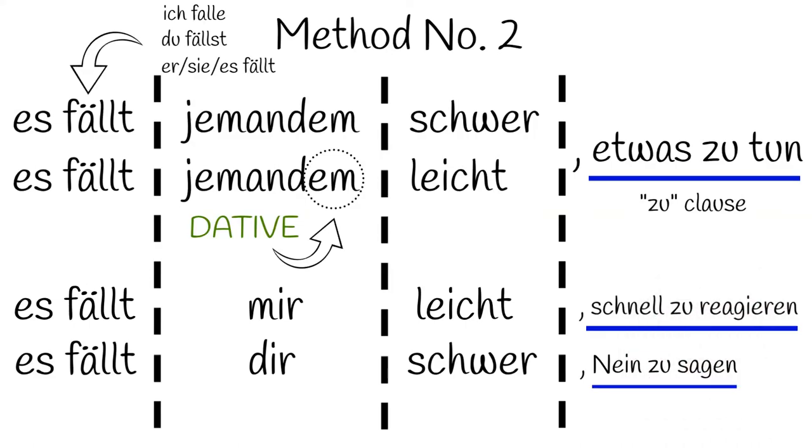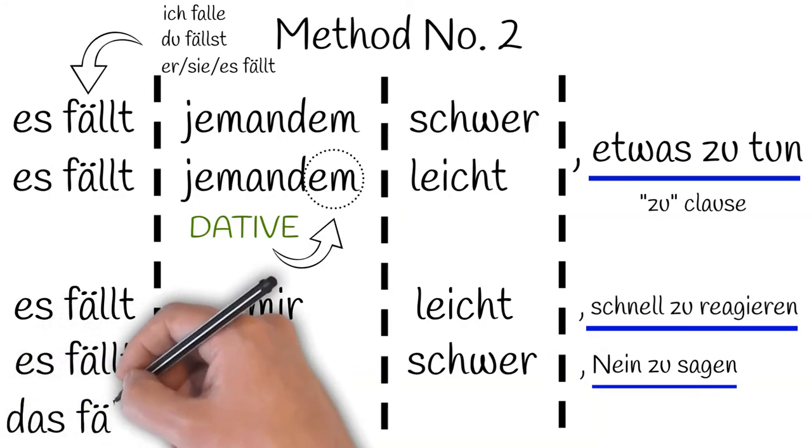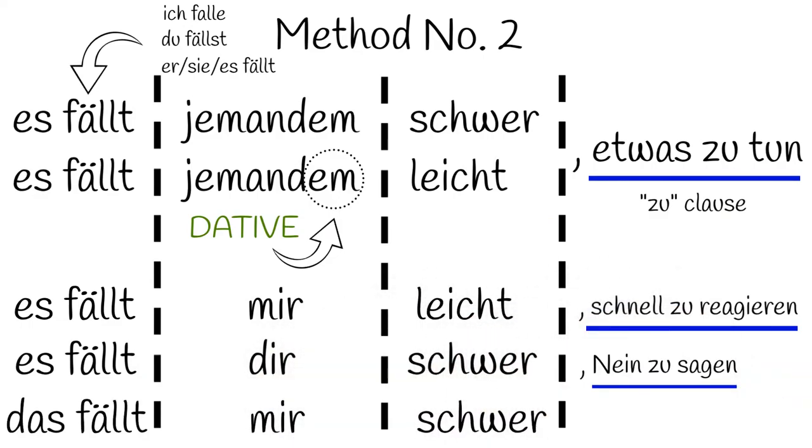And finally, once again, I want to show you that this can be used in very simple and common sentences like, das fällt mir schwer. So instead of using es, anticipating a zu clause after the main clause, we're using das as a pronoun to refer to something we've already spoken about or we're aware of.